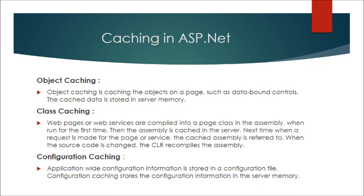Object caching is caching the objects on a page, such as data-bound controls. The cached data is stored in server memory. Class caching: web pages or web services are compiled into a page class in the assembly when run for the first time. Then the assembly is cached in the server. Next time when a request is made for the page or service, the cached assembly is referred to. When the source code is changed, the CLR recompiles the assembly.